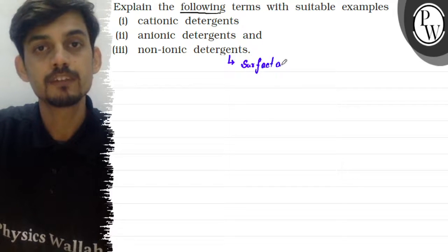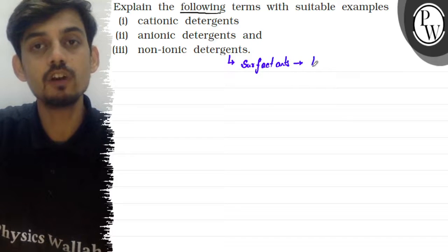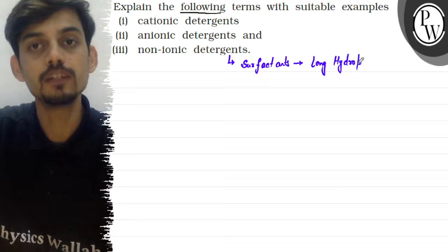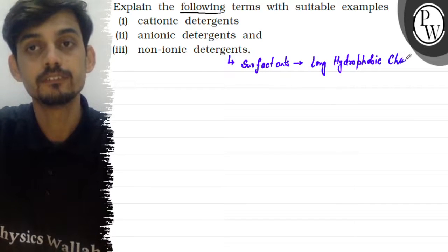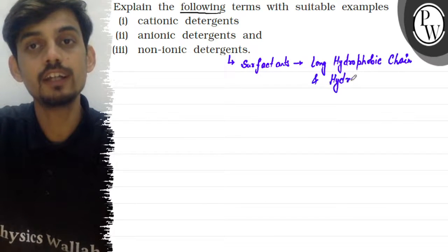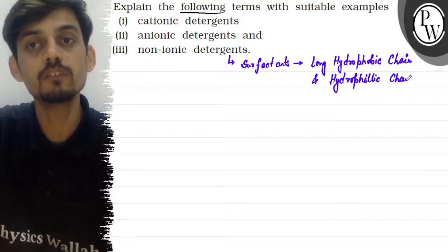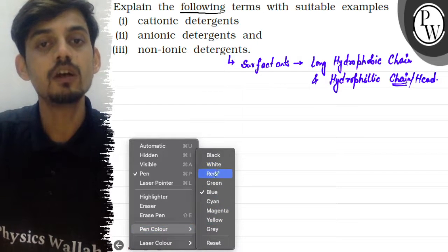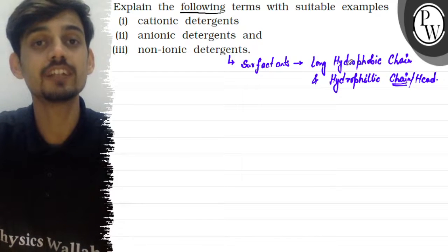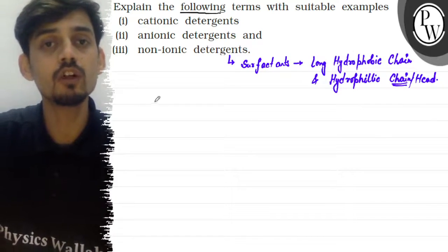Surfactants have a long hydrophobic chain and a hydrophilic head. The hydrophilic head is attracted to water, while the hydrophobic chain is not. Cationic, anionic, and non-ionic detergents are basically named on the basis of the charge on the hydrophilic head.